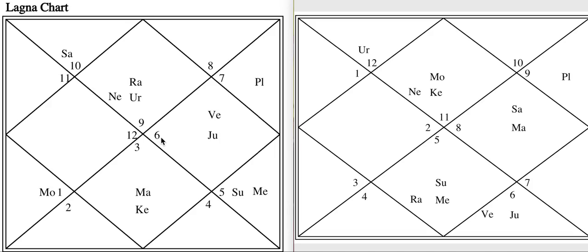The strength of the yogas in the lagna chart will tell you how strongly the yogas in the Tithi Pravesh chart will work. It is not the other way around — a strong yoga in the Tithi Pravesh chart cannot override the lagna chart. The lagna chart will always ultimately have the final say. You must first analyze from the lagna chart before going to the Tithi Pravesh chart. Reading the TP chart without first seeing the lagna chart will lead you to disaster.